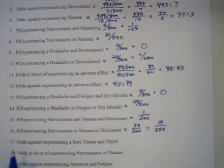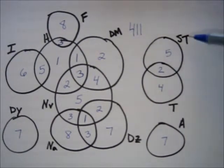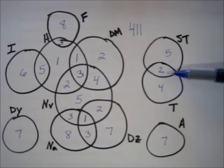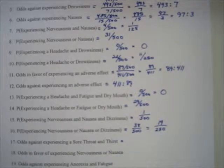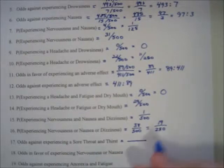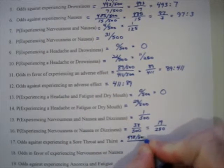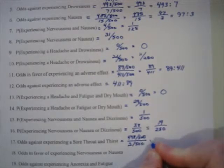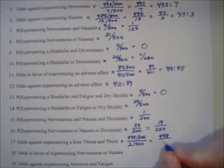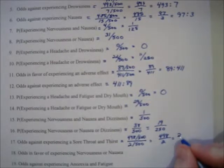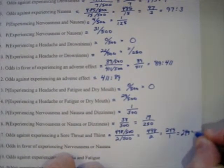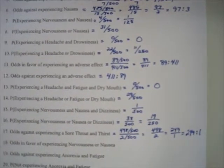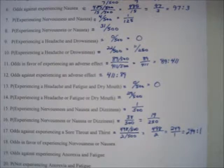Problem 17: odds against experiencing a sore throat and thirst. There are two people who experienced both, so 2 out of 500 experienced it. For odds against, probability of failure comes first — 498 out of 500 don't experience both. That becomes 498 over 2, or 249 over 1, giving the odds statement 249 to 1. Pretty unlikely.